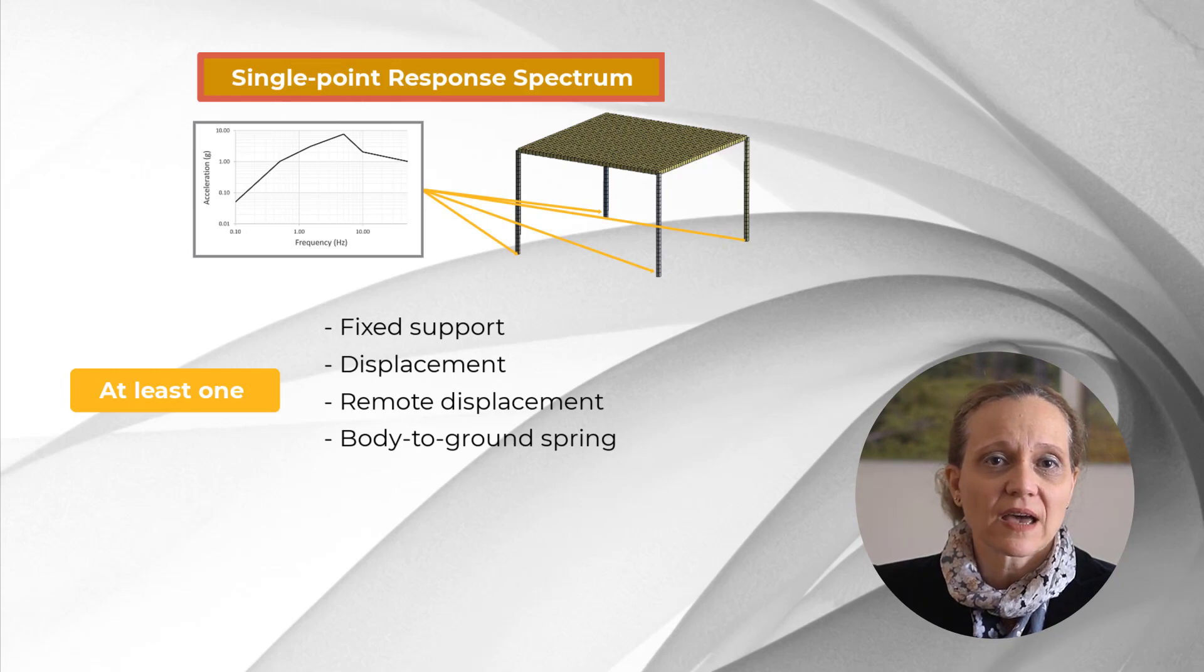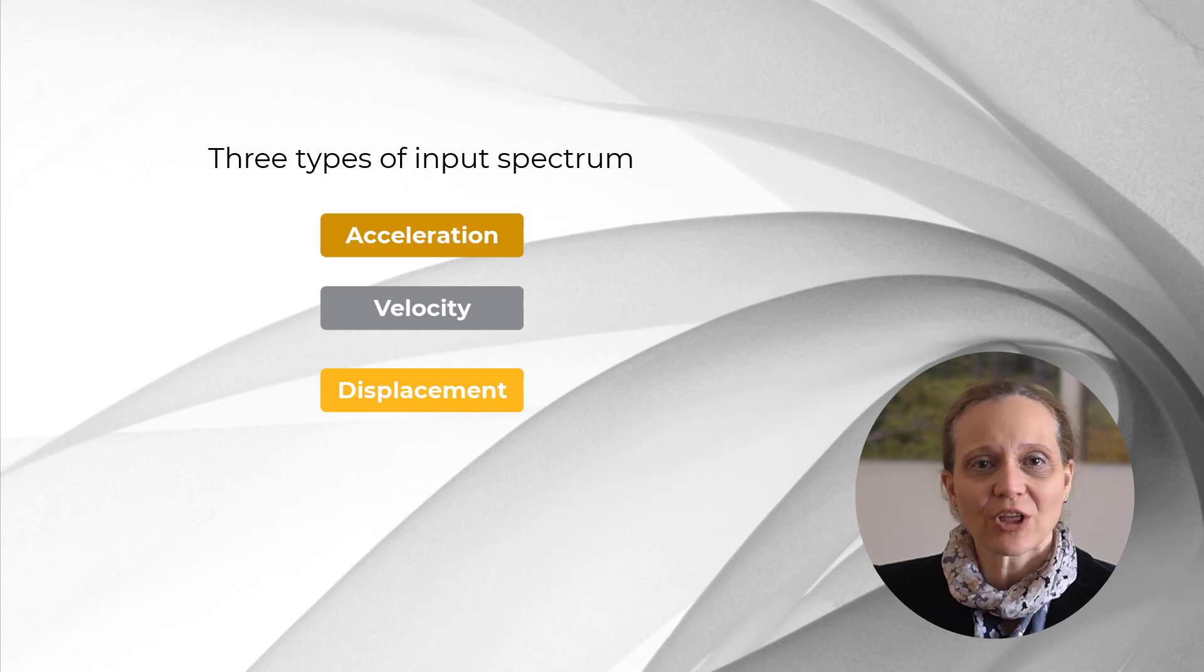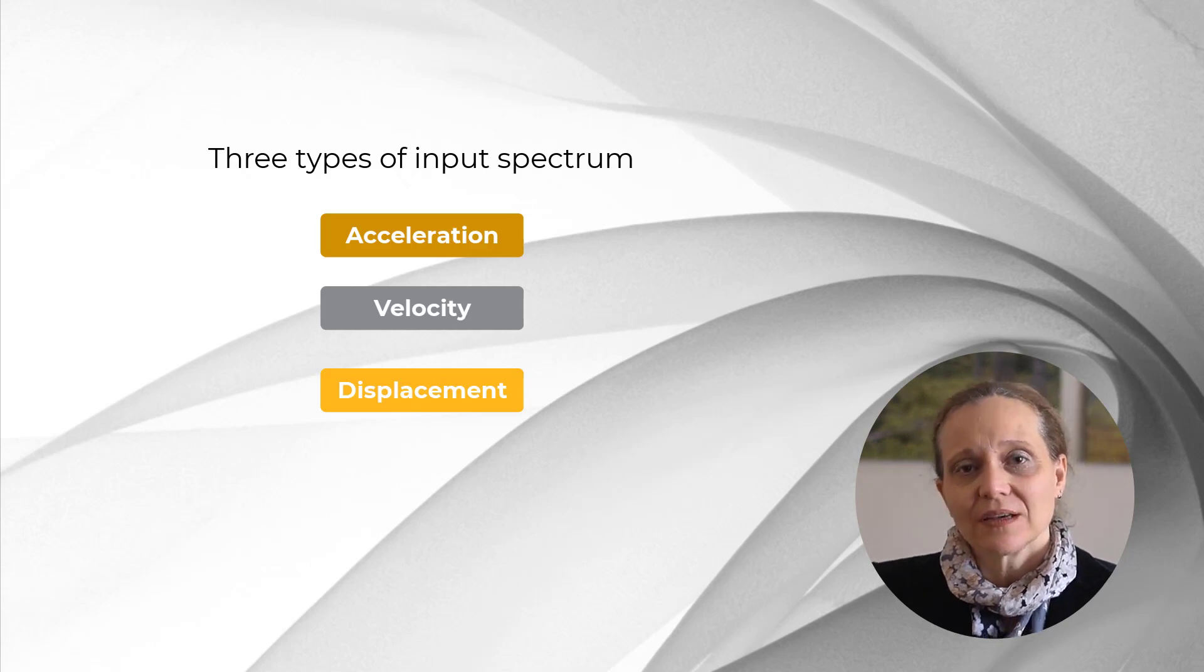Input excitation is acting uniformly on all support points. Three types of input excitation spectrum are supported: displacement, velocity and acceleration. The input excitation spectrum direction is defined in a global coordinate system.